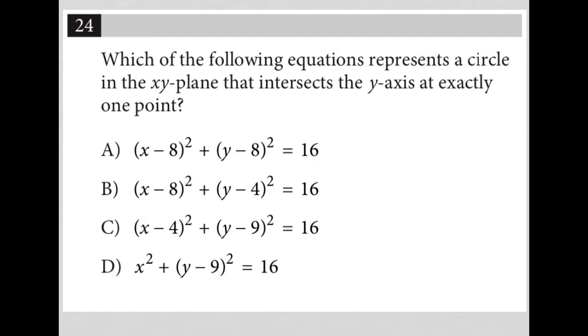First of all, the equation of a circle looks like this: (x - h)² + (y - k)² = r², where (h, k) represents the center of the circle, and r represents the radius.